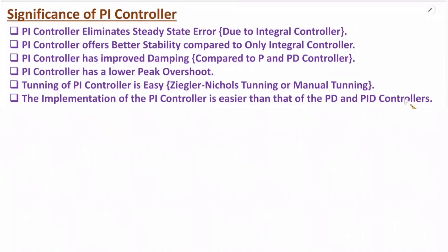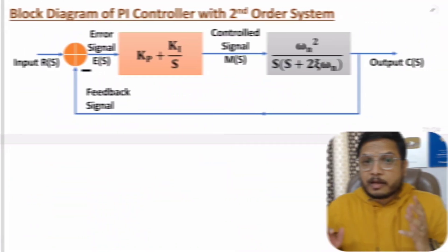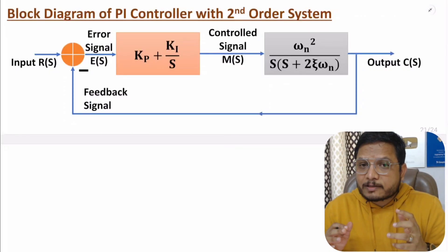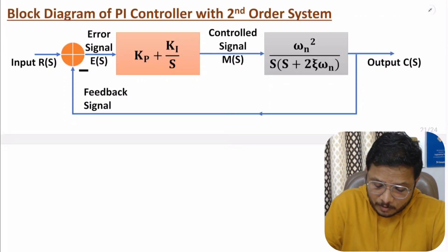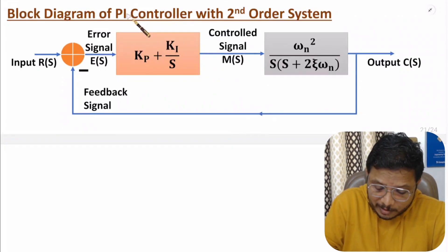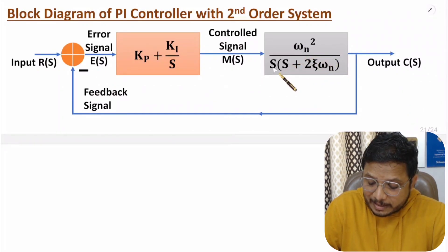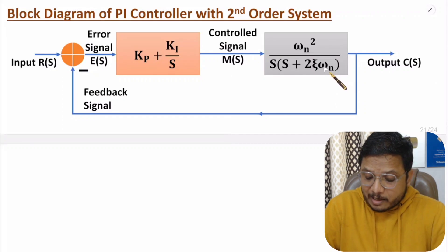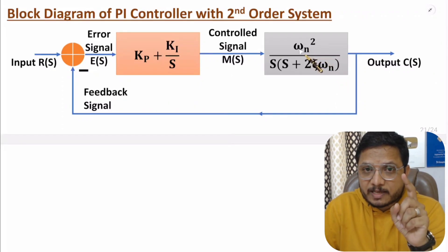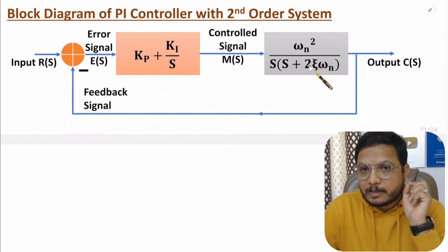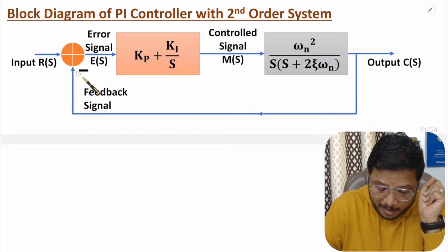Now I will explain the block diagram and transfer function of the PI controller connected to a standard second-order system. The transfer function of the PI controller is Kp plus Ki/s. The standard second-order system transfer function is ωn² divided by s(s + 2ζωn), where ωn is the natural resonance frequency and ζ is the damping constant. Unity negative feedback is used.